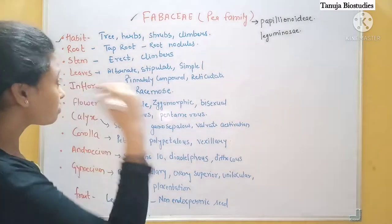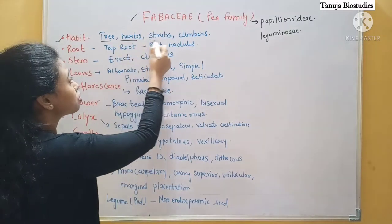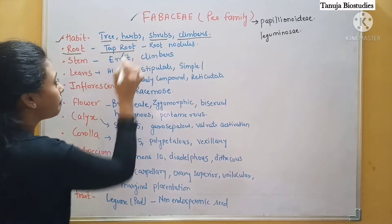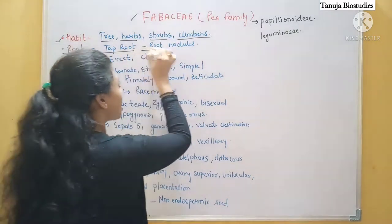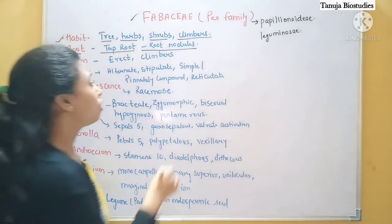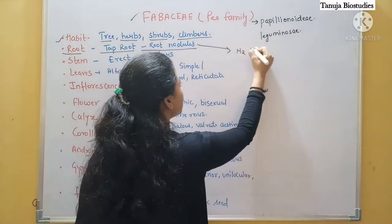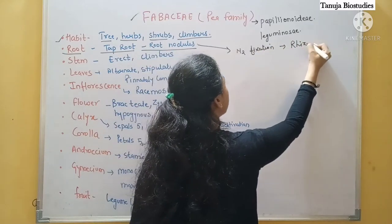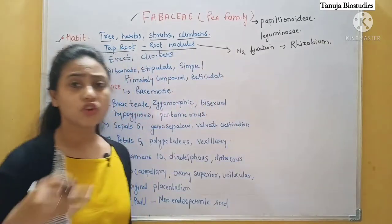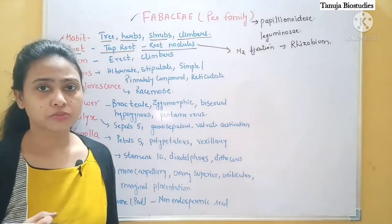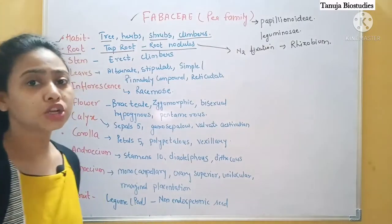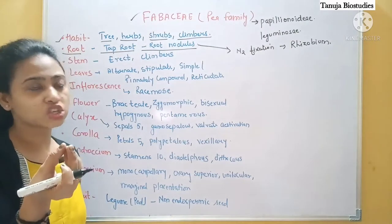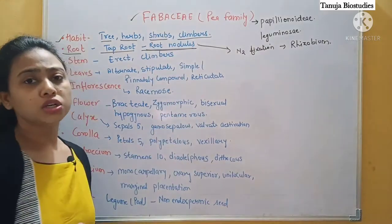In this family there are trees, shrubs, as well as climbers. On top of the root system, root nodules are present. If you know what root nodules do — that is nitrogen fixation. With the help of a bacteria called Rhizobium, they are responsible for capturing nitrogen from the atmosphere, fixing it, and providing it to the plant. These swollen structures present on the root are known as root nodules.